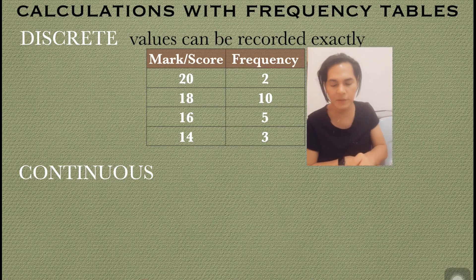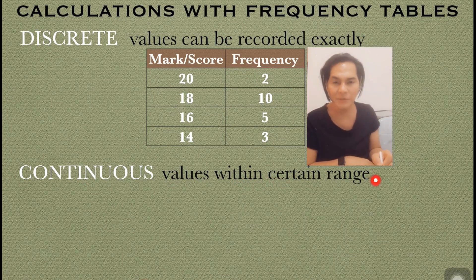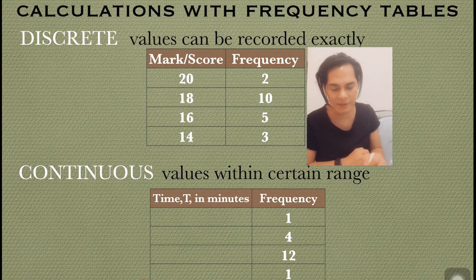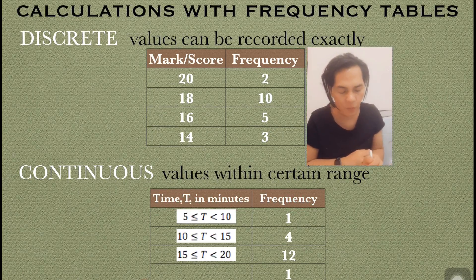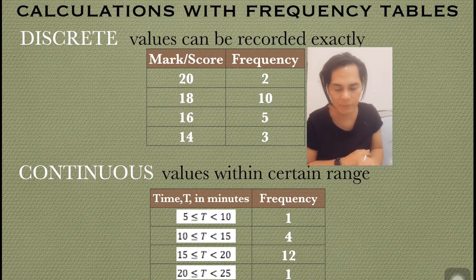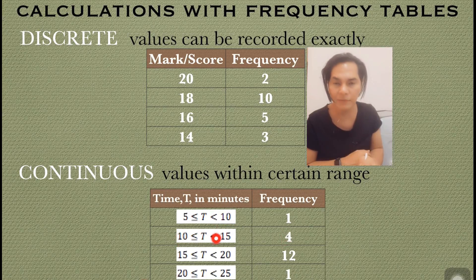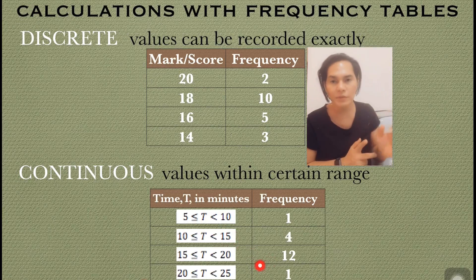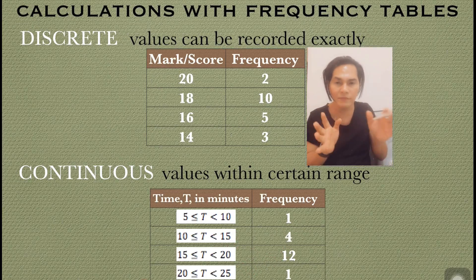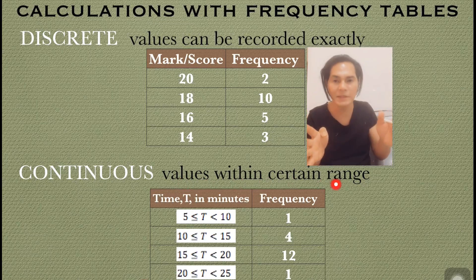The second type is continuous, meaning values within a certain range. To understand this, consider a table with time T in minutes and frequency. There is one frequency for timing greater than or equal to 5 but less than 10, four with greater than or equal to 10 but less than 15, and so on. That's the meaning of continuous — the values are within a certain range.